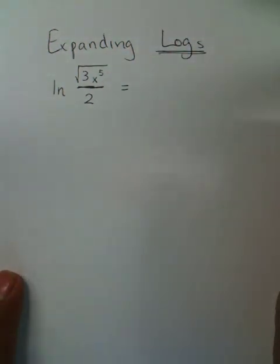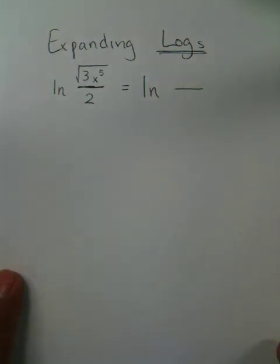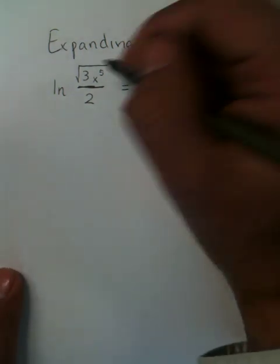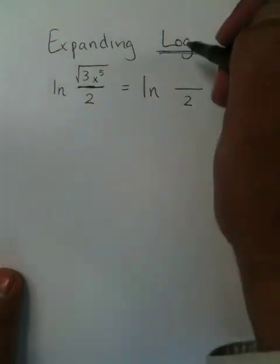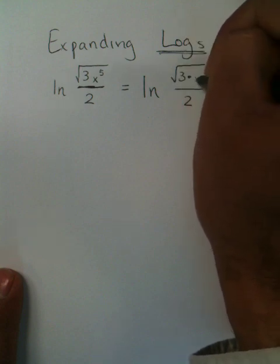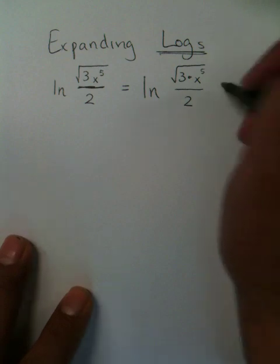It's very obvious you have a fraction, so there's division. On the bottom you're going to be dividing by two. Now this radical, if I break this radical down what I see is really I see a 3 being multiplied by an x to the fifth power.